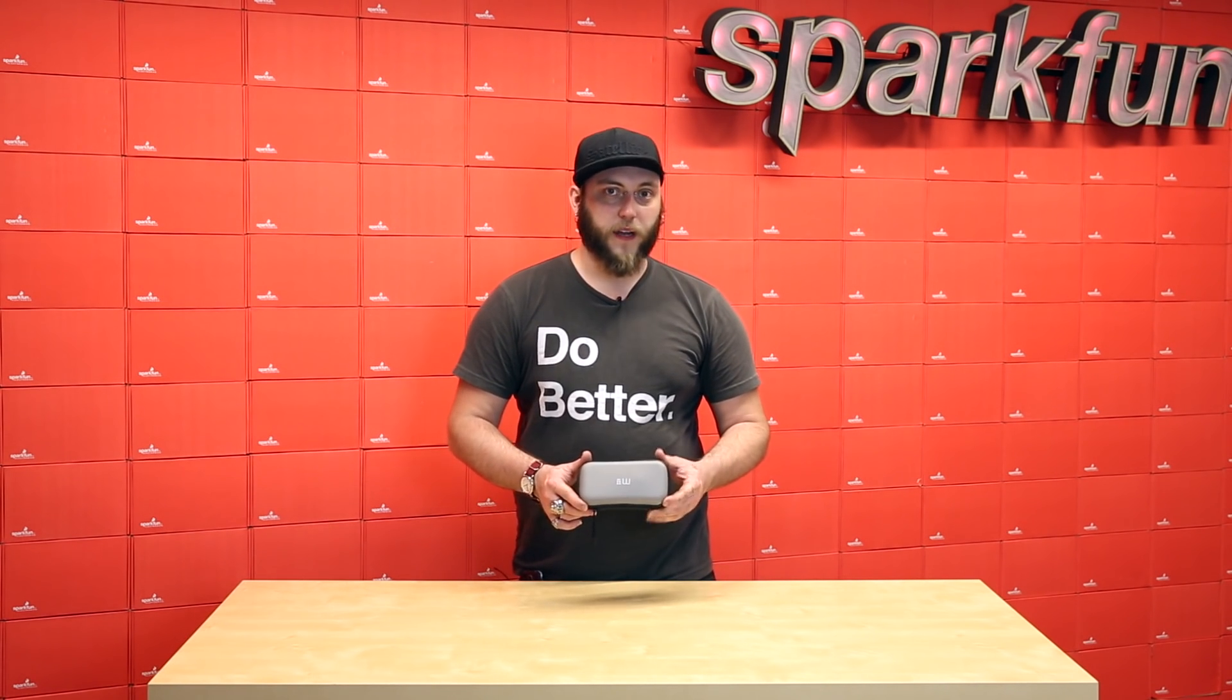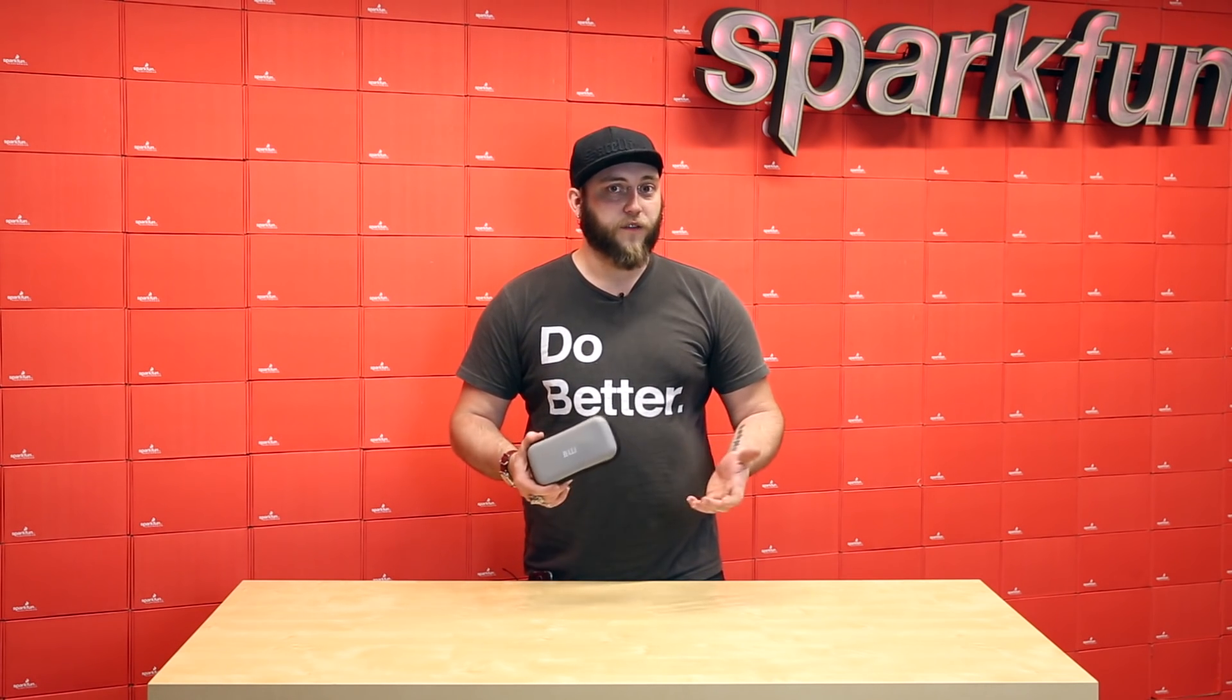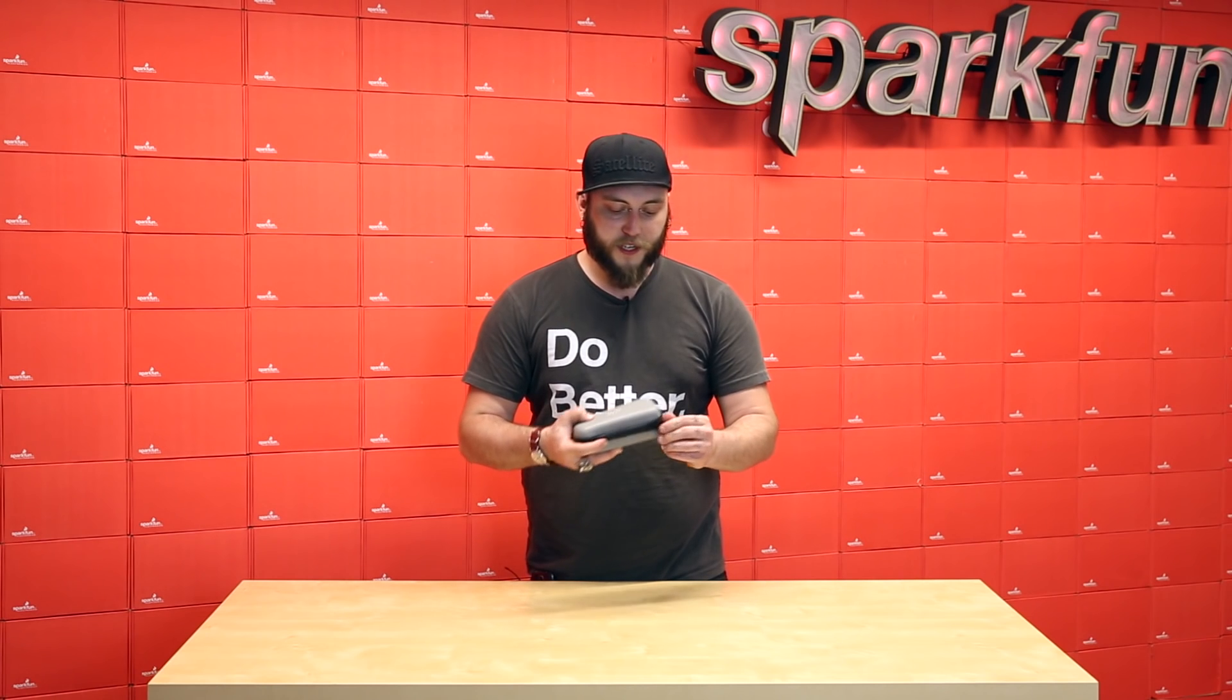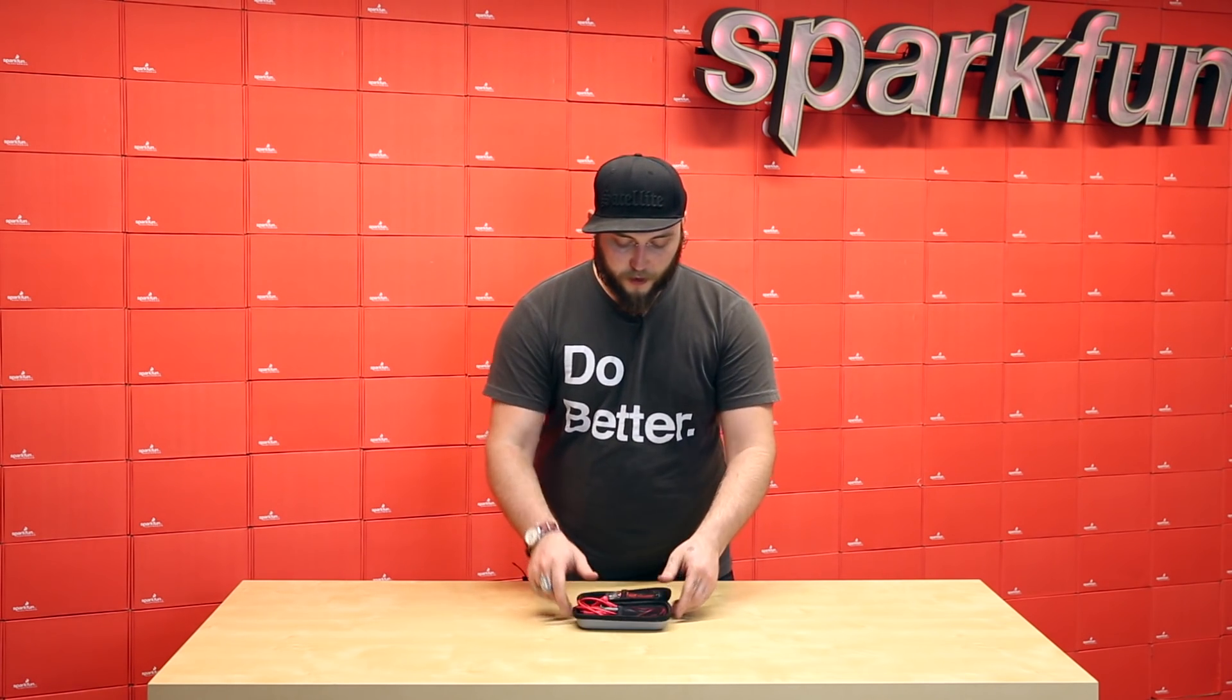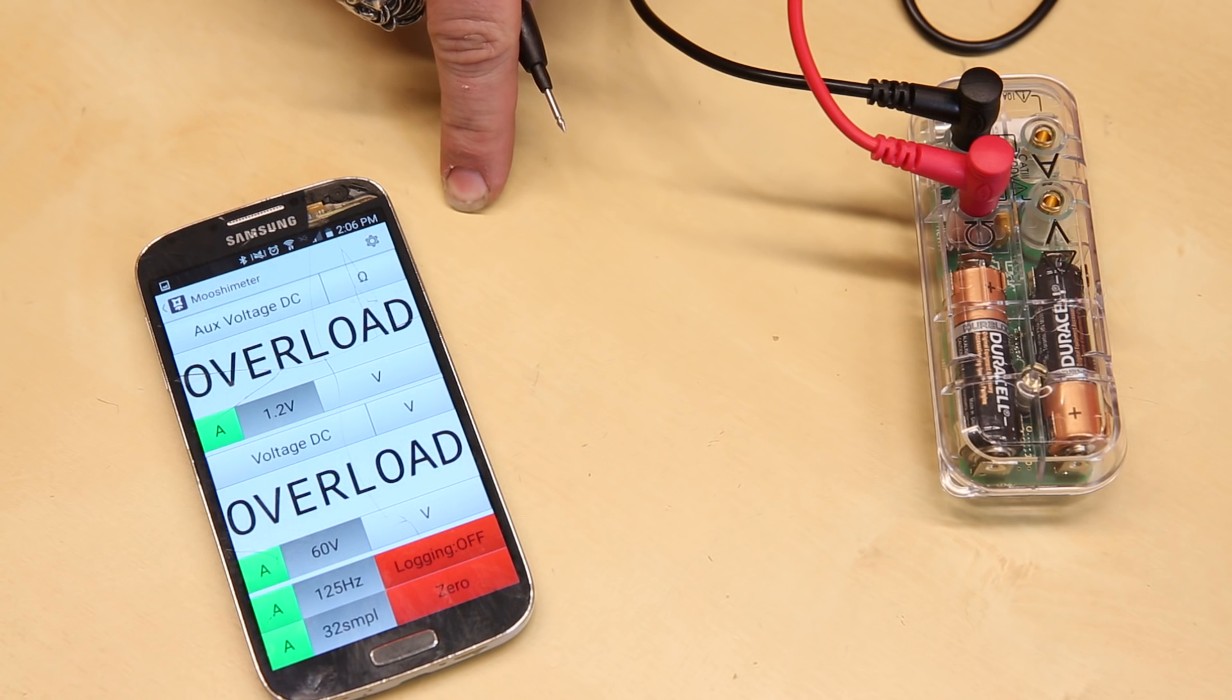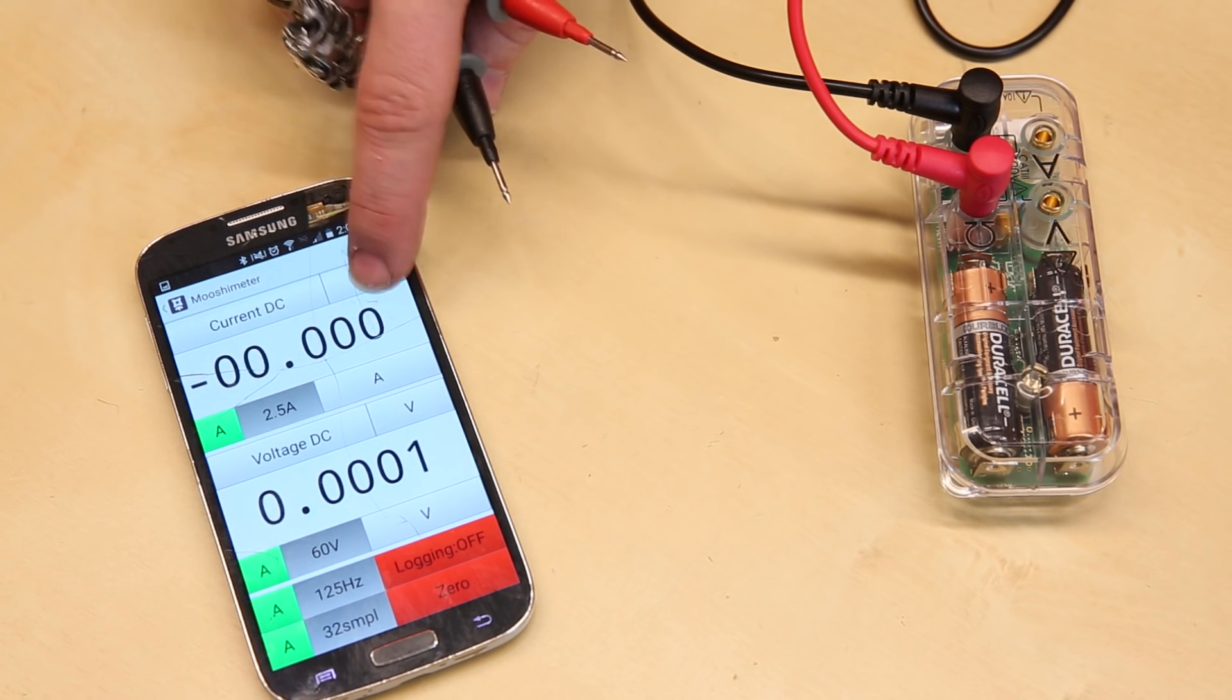This next product is a multimeter, and it has all the same functions that you expect from a modern multimeter. It'll measure voltage, current, and resistance. But it does something unique, which is that it interfaces with your smartphone. The meter itself doesn't have a screen. It doesn't have a big knob to select the function. You simply connect it to your phone over Bluetooth, and then your phone can show you the values that you're reading on the multimeter and log those values.